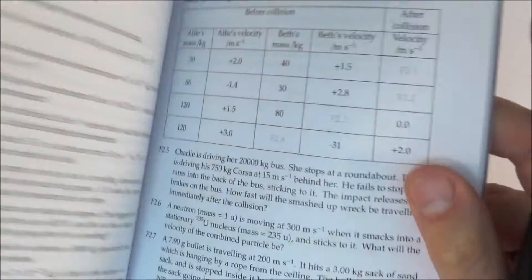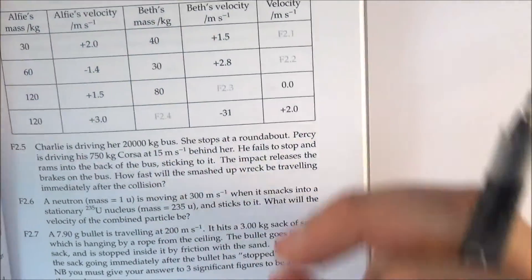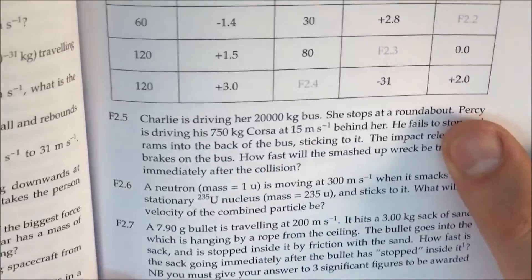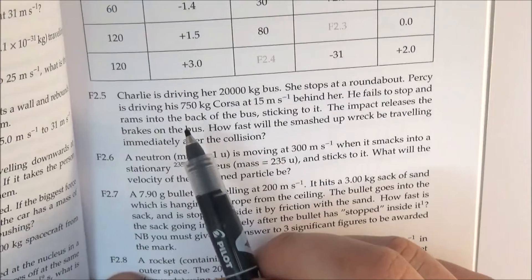To really demonstrate this I'd like to use a question from the Isaac Physics book. I'm not going to do all the questions, but I'm just going to pick one question and this one is F2.5.